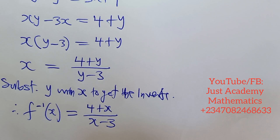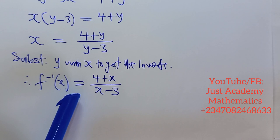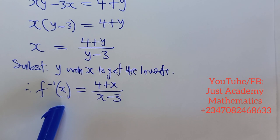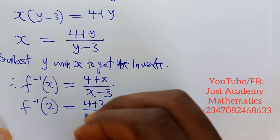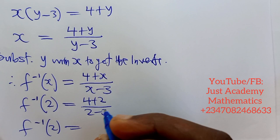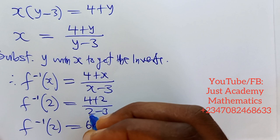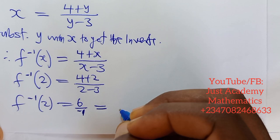Now that we know the inverse of x, we can find the inverse of 2. We put 2: (4+2)/(2-3). So the inverse of 2 is equal to 6 divided by -1, which gives us -6 as the answer.